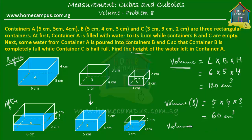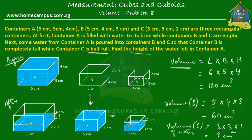For container C, we don't want the full capacity — we want the volume of water present, because container C was not filled to the top. Container C was half full, which means the height of the water level was 1 centimeter — half of the total height of 2 cm. So the volume of water in container C equals 3 times 3 times 1 — length times breadth times half the height — which is 9 cubic centimeters.